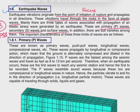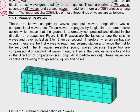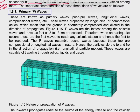Surface waves have further two varieties: Rayleigh waves and Love waves. Taking primary or P-waves first, these are known as push-pull waves, also known as longitudinal waves or compressional waves. These waves propagate by longitudinal action.